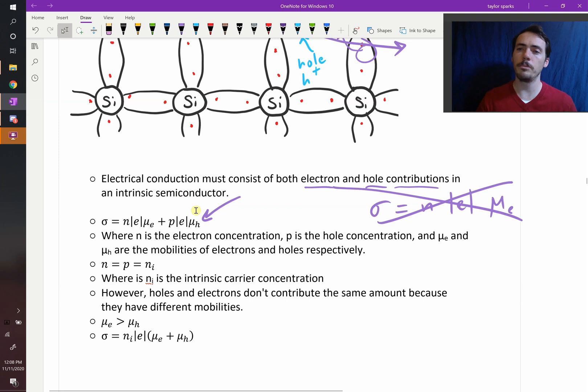Now, what's interesting is that the mobility does not have to be the same, it won't be the same. In fact, in materials, it can be different. But the concentration of n and P will be the same for an intrinsic semiconductor, where you haven't doped it.